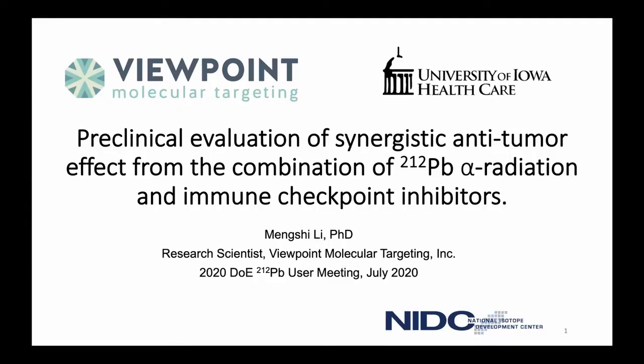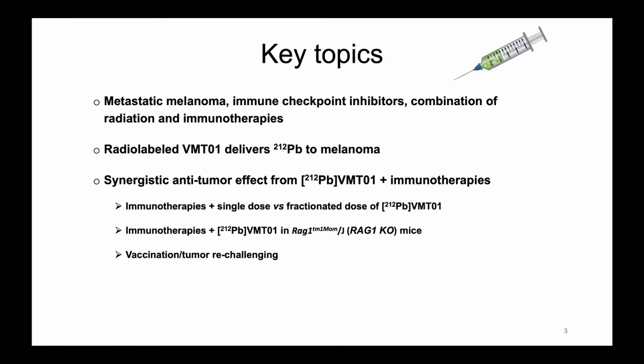Today I'm going to talk about our work on the combination of lead-212 alpha particle therapy and immune checkpoint inhibitors. I'll start with a brief introduction about melanoma disease and immunotherapies and the rationale for combining radiation and immunotherapies. Then I'll introduce our approach to deliver lead-212 to melanoma and the synergistic anti-tumor effect from this combination, including single dose versus fractionated dose, mechanism studies using genetically modified animal models, and a vaccination tumor re-challenging study.